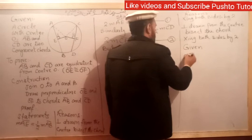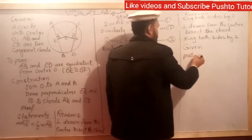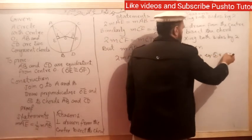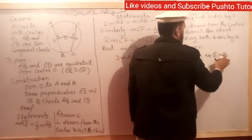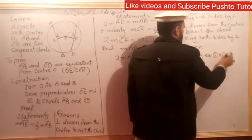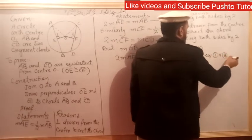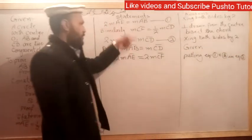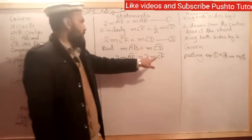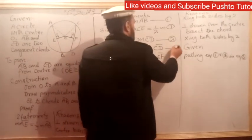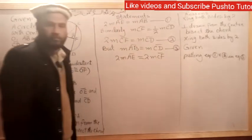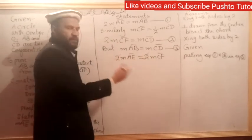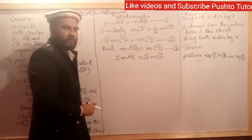Combining equations 1 and 2 into equation 3, and substituting, we divide both sides by 2. The result gives us OE equals OF, which proves that the two congruent chords are equidistant from the center.